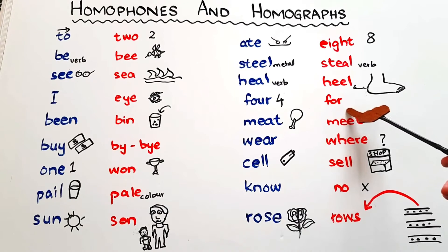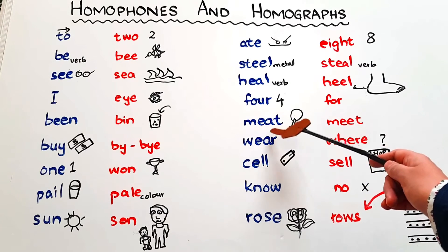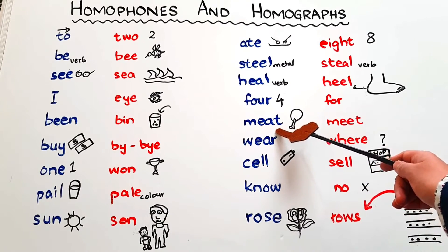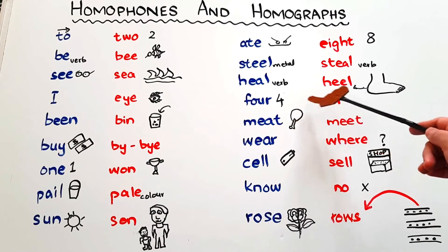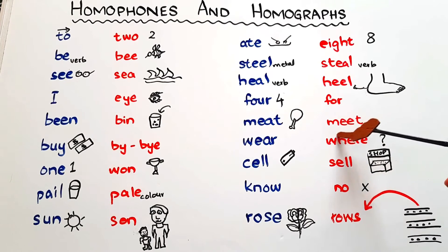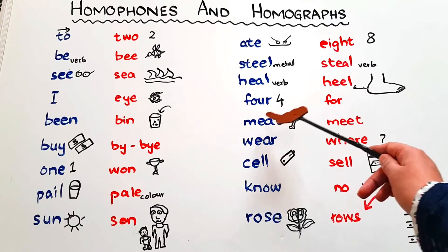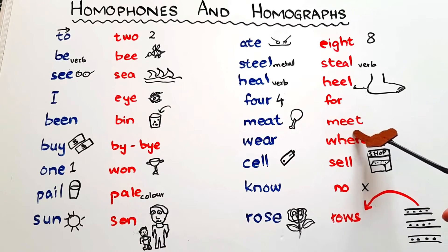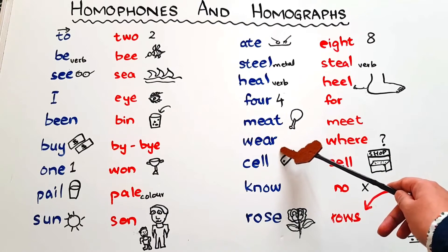Then we have 'meat' — used for any kind of flesh of animals that we can eat, whether chicken, beef, or mutton — and 'meet', M-double-E-T, meaning to accompany someone or have a meeting. Only the long vowel spelling is changed and the meaning changes. The next word is 'wear' — go and wear your dress — and 'where', the question word used for asking about position.